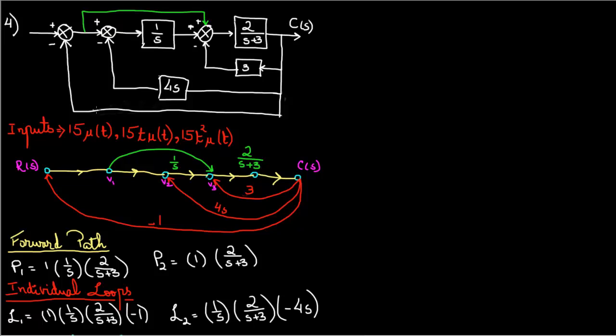So what you do, for instance right here after v2 you see you have 1 over s, so you would mark 1 over s for that part of the forward path. And all the blocks that are labeled as you see in the system you would just mark them.